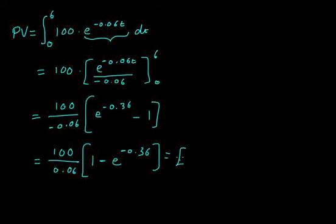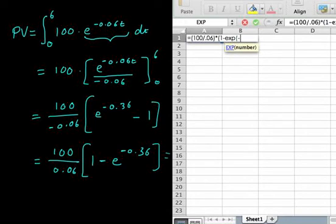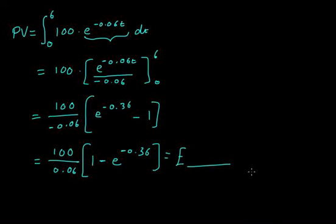Let's use Excel to find out what that is. That is 100 divided by 0.06 multiplied by 1 minus the exponential of negative 0.36. And what do we get? £503.87.